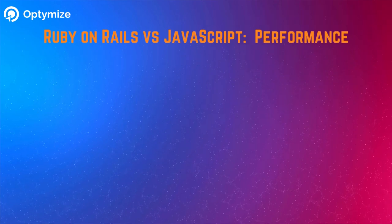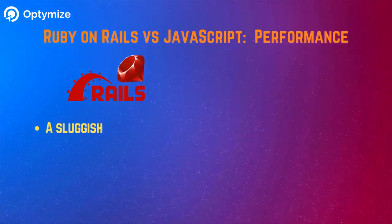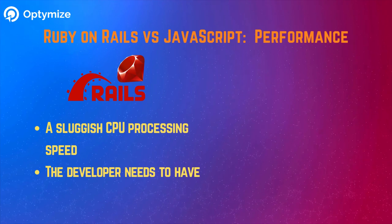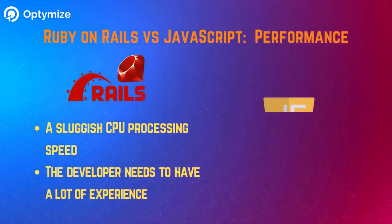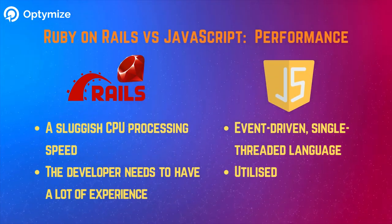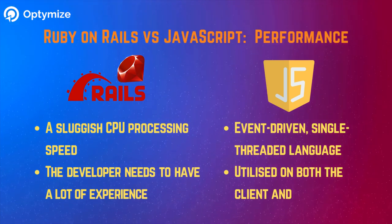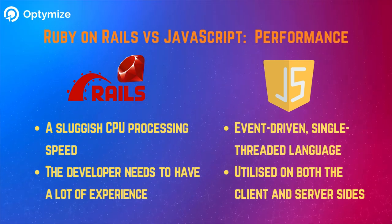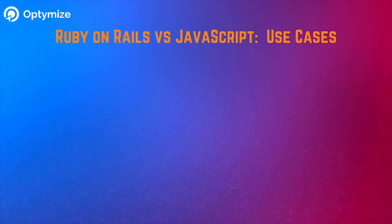Ruby on Rails vs JavaScript — performance: Ruby on Rails has a sluggish CPU processing speed and the developer needs to have a lot of experience. JavaScript is an event-driven, single-threaded language utilized on both the client and server sides.